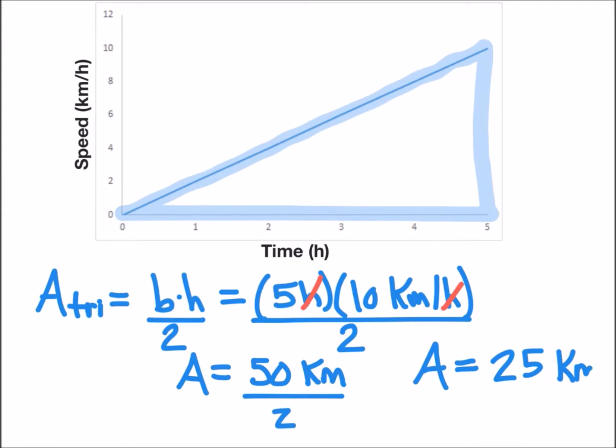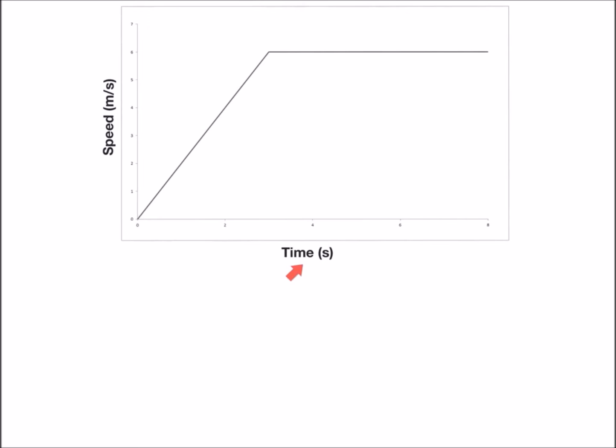So that tells us that the object moves 25 kilometers in the five hours. The second example has time in seconds on the x-axis and speed in meters per second on the y-axis.